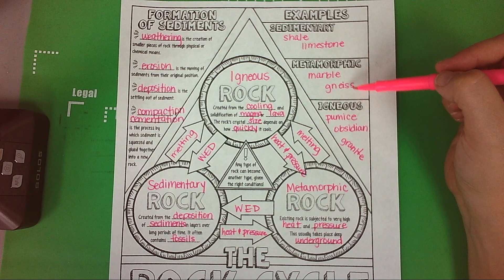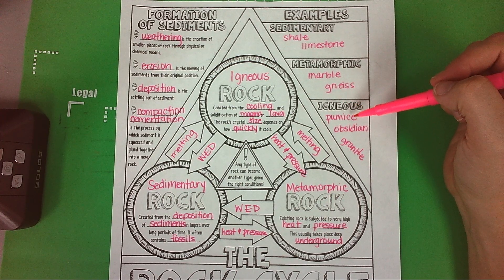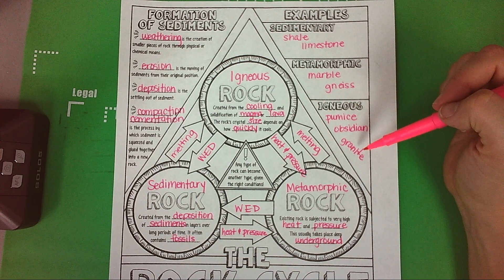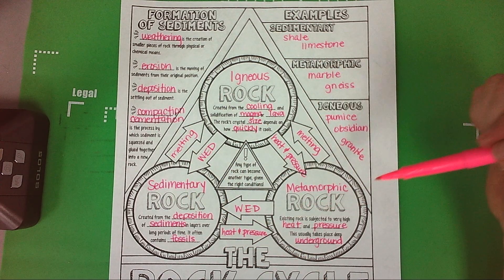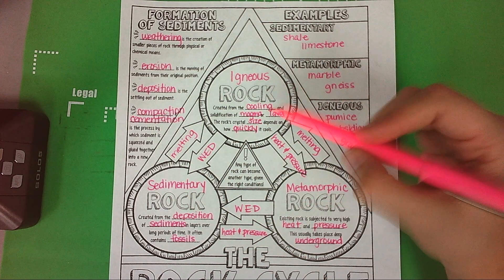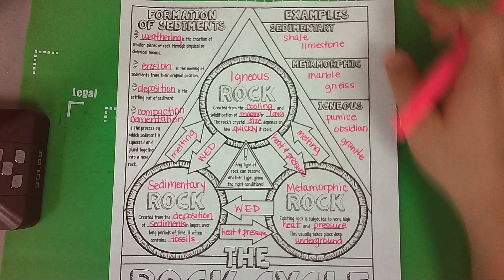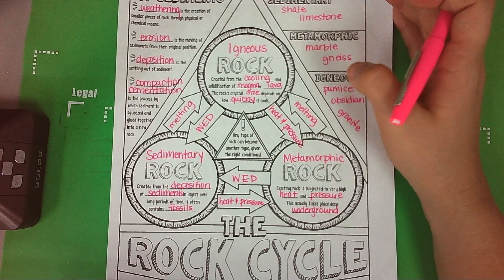Granite. So examples of sedimentary rock: shale and limestone. Metamorphic rock: marble and gneiss. Igneous rock is pumice, obsidian, and granite. Remember that after you finish writing in, you should shade in and color and make these notes pop off of your page. That's part of your notebook grade.